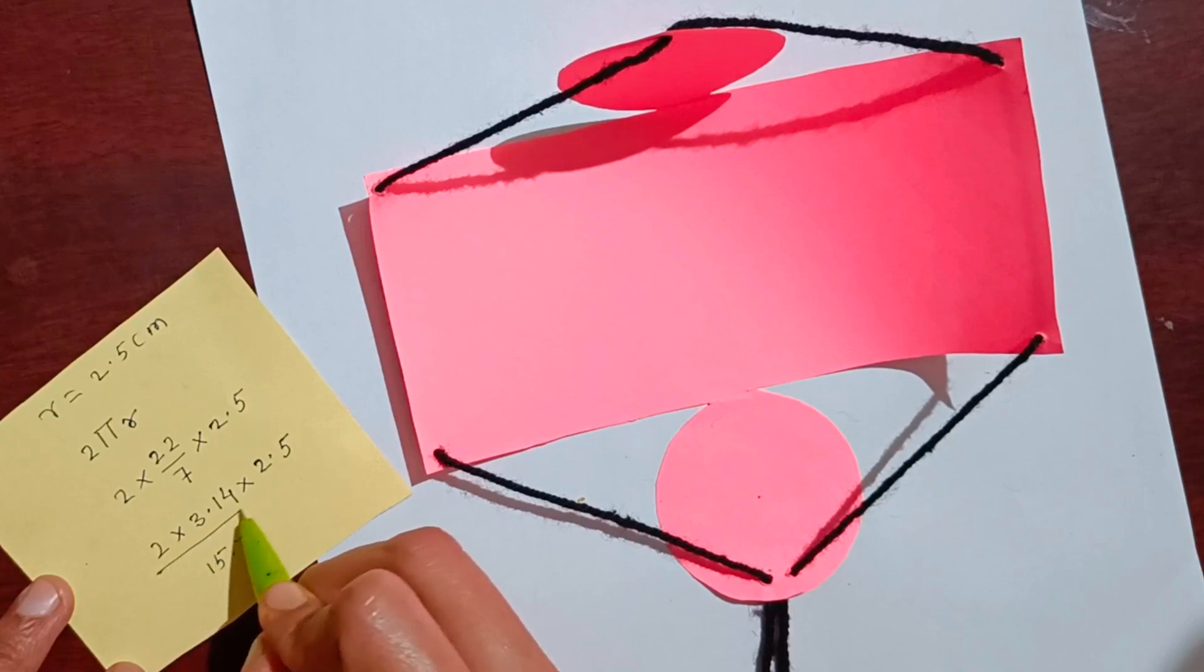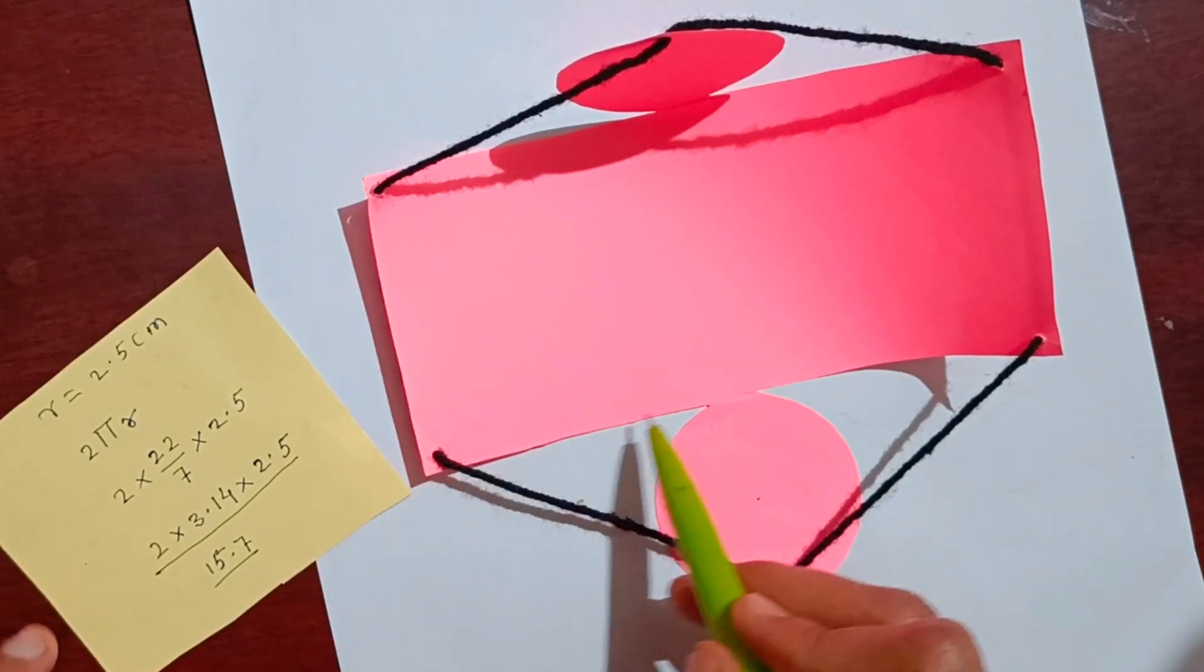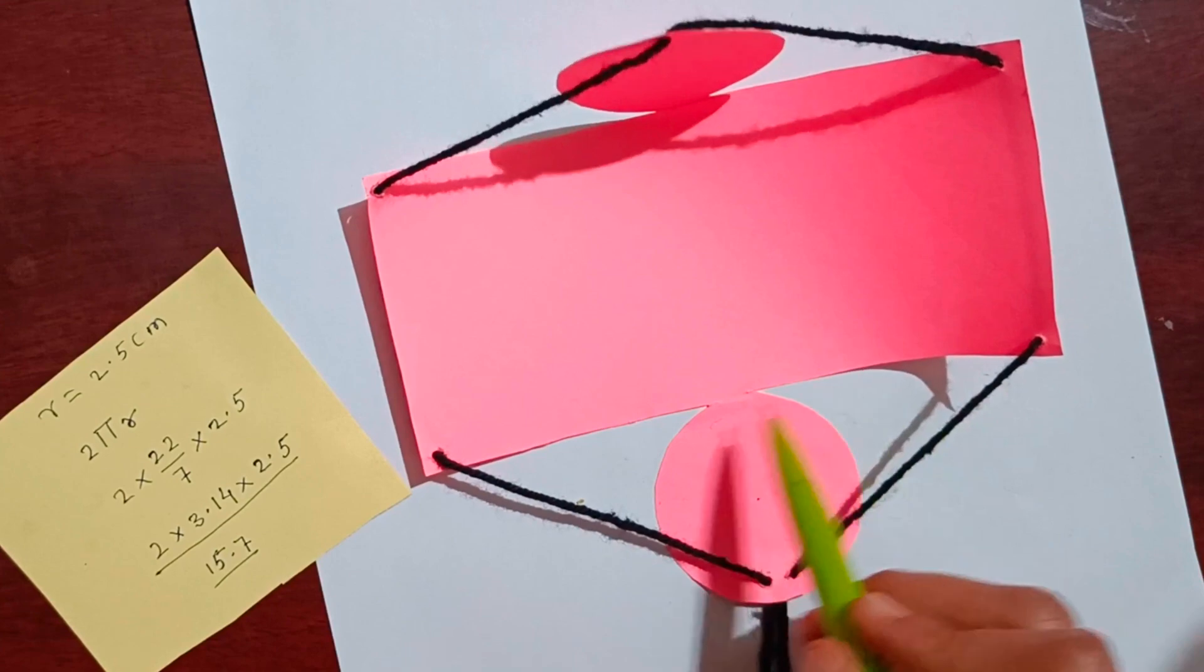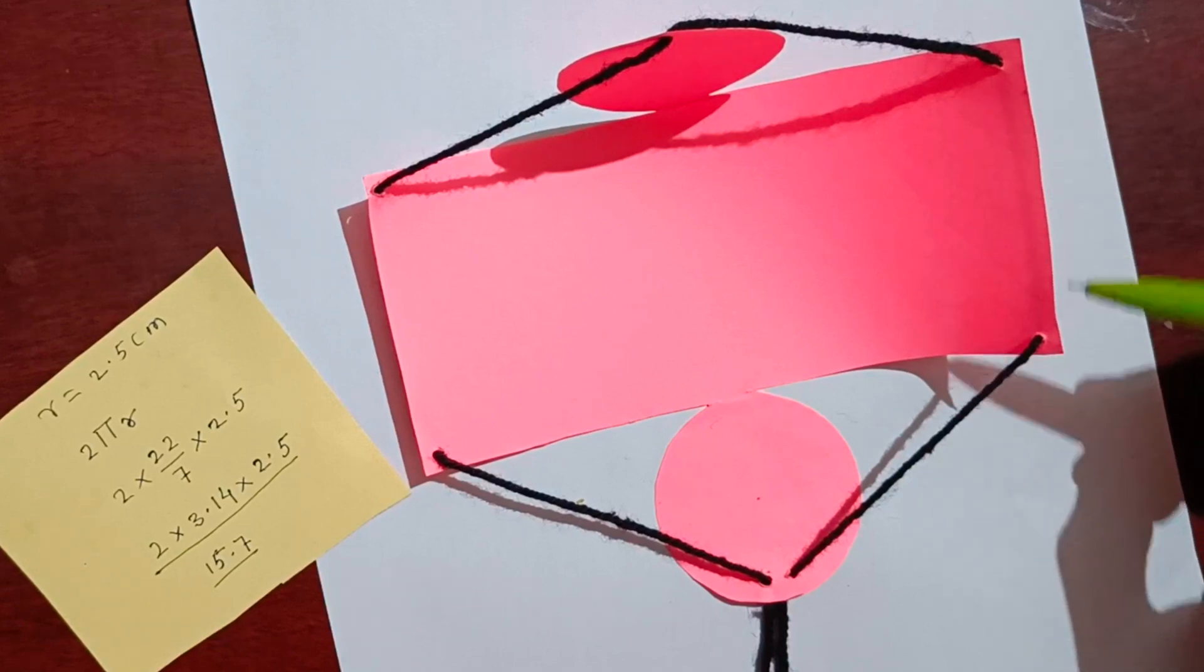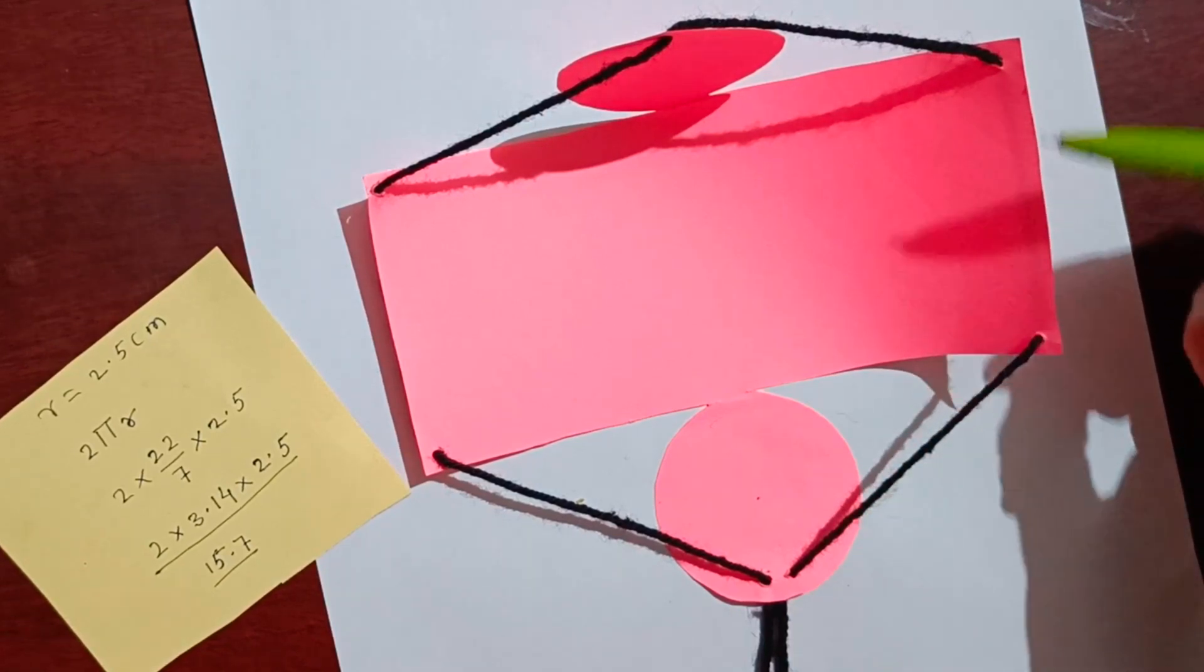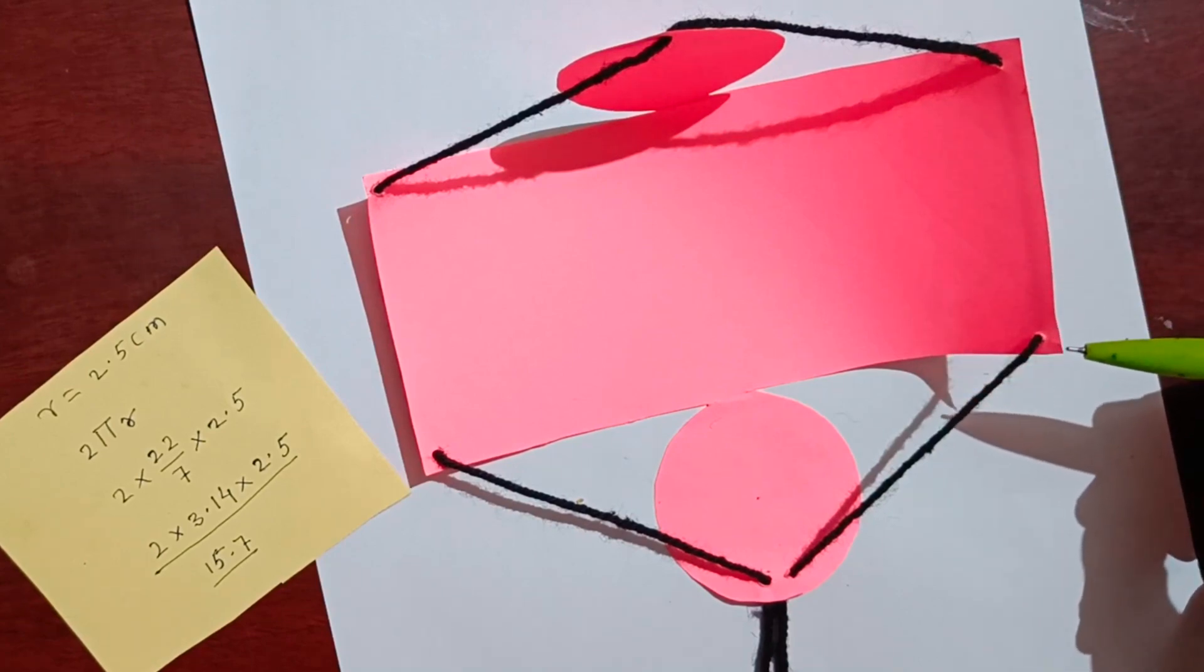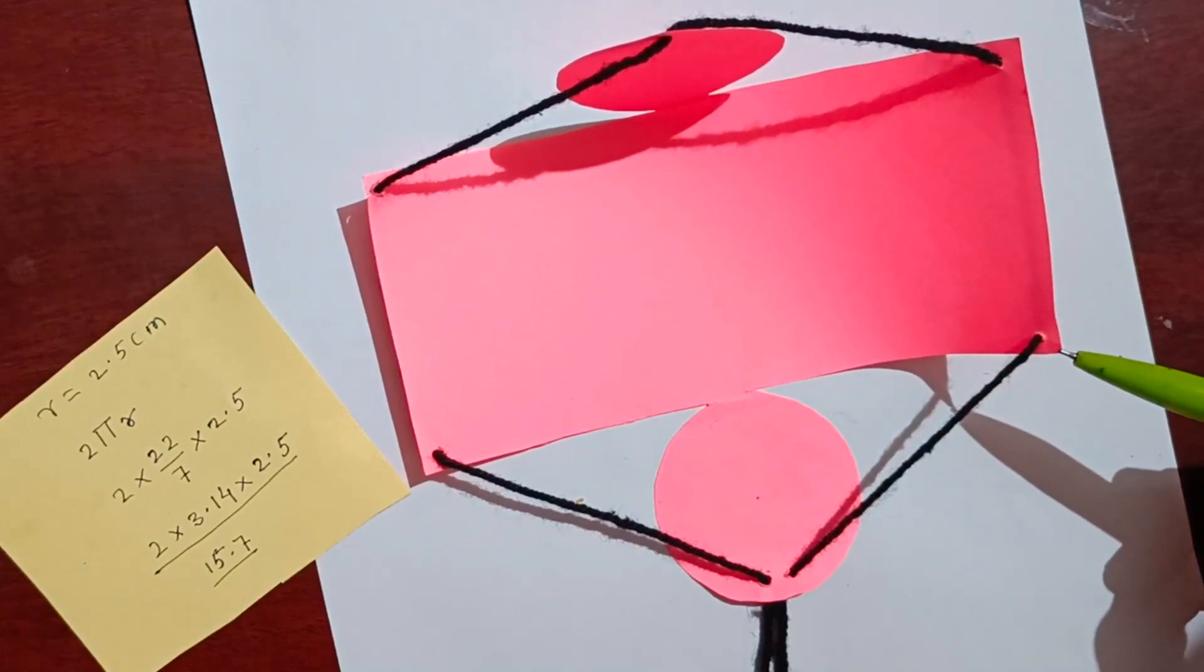If you calculate this, the answer will come to 15.7 cm. So I have taken this length 15.7 cm, this length of a rectangle. And how much width have I taken? As much length as you want, you can take. So I have taken this width 7.2 cm.